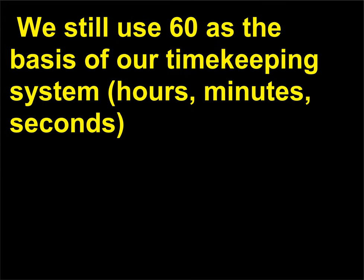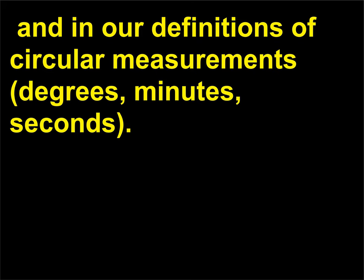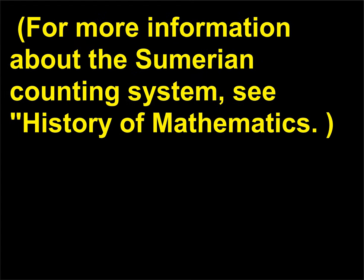Whatever the explanation, their methods proved to be important to us centuries later. We still use 60 as the basis of our timekeeping system — hours, minutes, seconds — and in our definitions of circular measurements: degrees, minutes, seconds. For more information about the Sumerian counting system, see History of Mathematics.